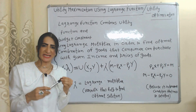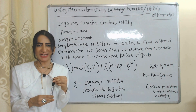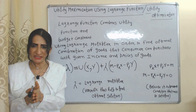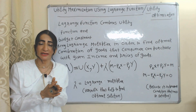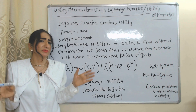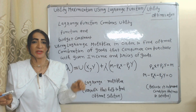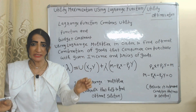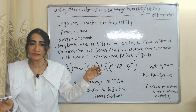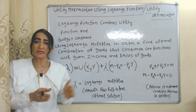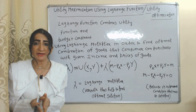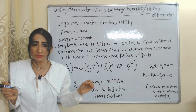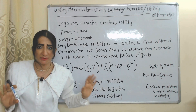Hello everyone, my name is Mini Sechi. I hope you all are staying healthy. Today we are going to talk about utility maximization by using the Lagrange function. The Lagrange function combines the utility function and budget constraint by using the Lagrange multiplier in order to find out the optimum combination that a consumer can buy with given income and prices of goods.